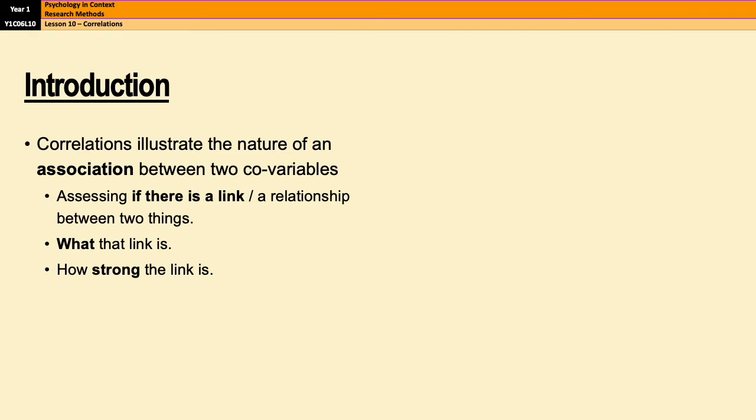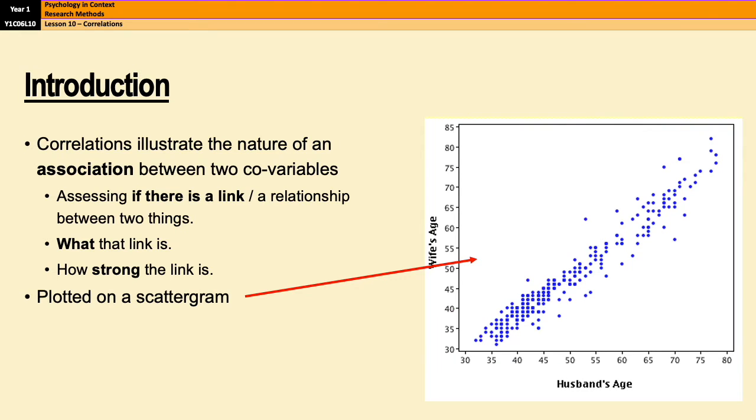Typically, correlations are plotted on a scattergram. It looks a little bit like this. It's important that you know what this is because it's very common to ask people in an exam to draw a scattergram. When you're drawing a scattergram, you plot your co-variables on each axis. So in this case, you are looking at the relationship between a wife's age and a husband's age. As you can see, the wife's age gets plotted on the y-axis and the husband's age gets plotted on the x-axis. But it doesn't really matter. You could switch those around if you wanted to. Each one of the blue dots is a participant or is a pair of participants in this case.